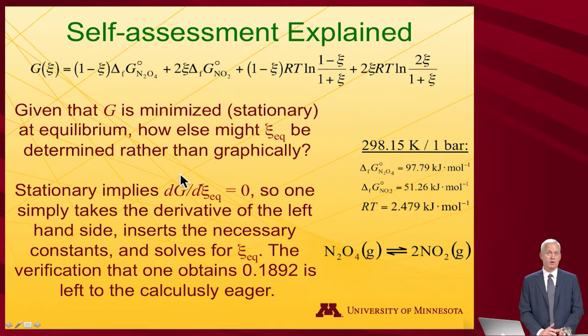And the answer to that is one can use calculus, of course, to find a stationary point. You can differentiate this expression for G with respect to ξ. And for those who love doing differential calculus, you'll have your chance to explore the chain rule extensively in doing that differentiation. And when you're all done and you solve for setting that equal to 0, because that's what a minimum is, you'll get 0.1892, which is, of course, what you have to get. So as I say, this is left for the calculus-ly eager, I didn't derive it here.